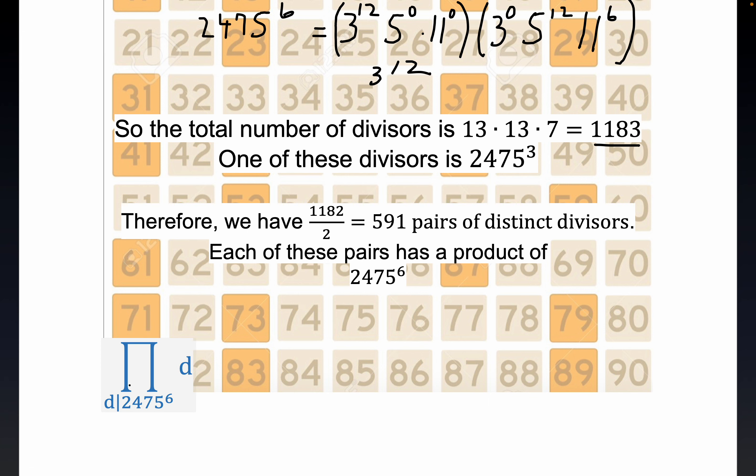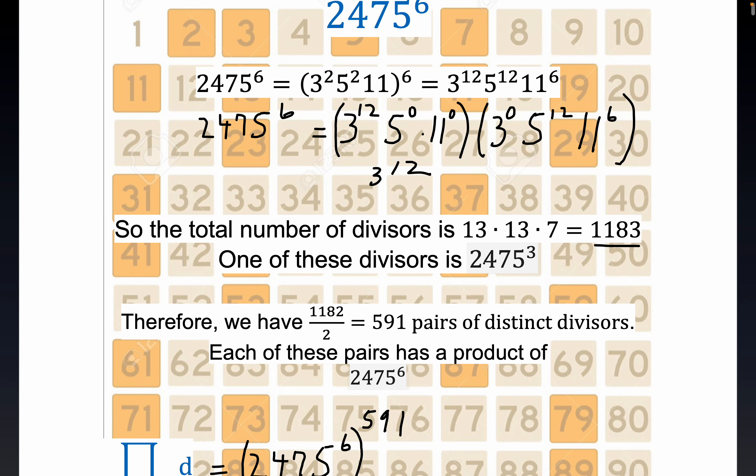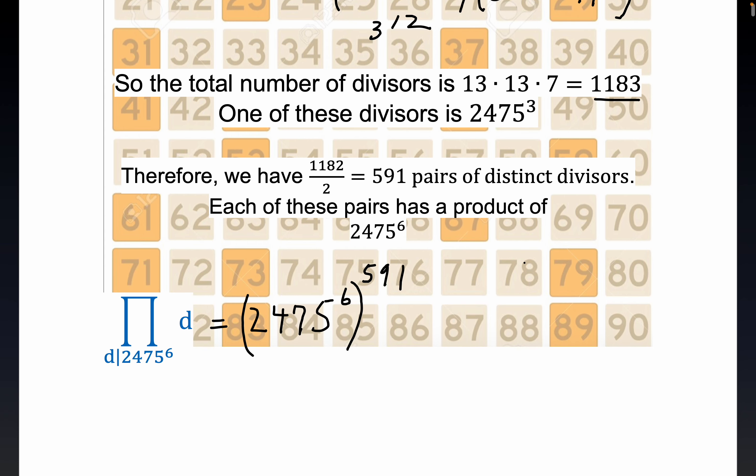So where does that lead us? Well, it tells us that the product of the divisors is going to be 2475 raised to the sixth. Now I'll just write it in a way that makes it more clear what we're doing here. Since there's 591 times this can happen with products of distinct divisors, we write 591 right here. And I hope that makes sense. I love this, I think it's really cool. Everybody knows about the sum of the divisors, but this is the product of the divisors. So you see that would handle all the distinct pairs, but we can't forget that we still have this guy left right here. One of the divisors is 2475 cubed. So we have to multiply this by 2475 cubed. That's kind of cool.